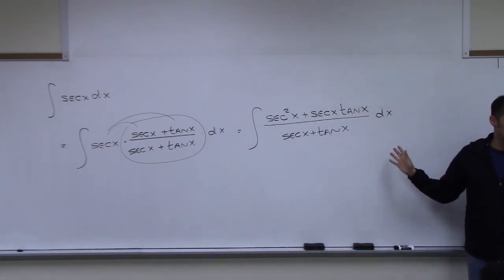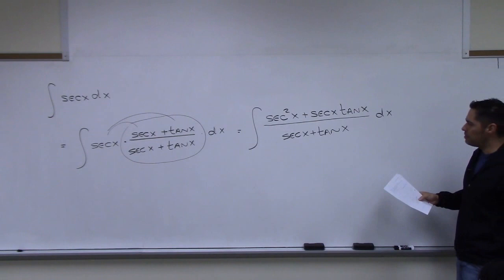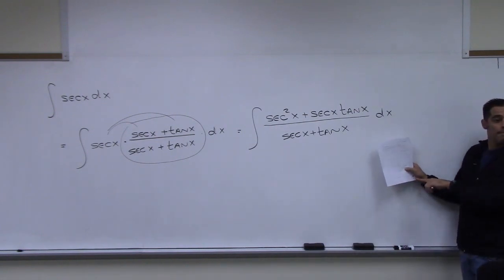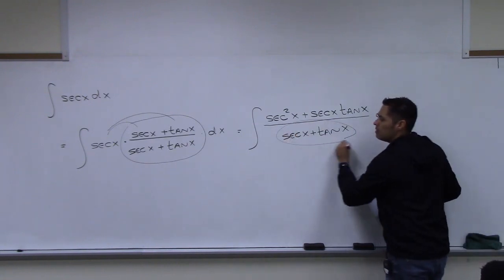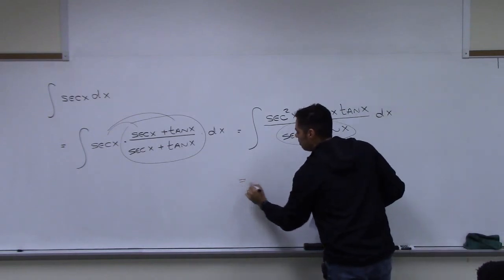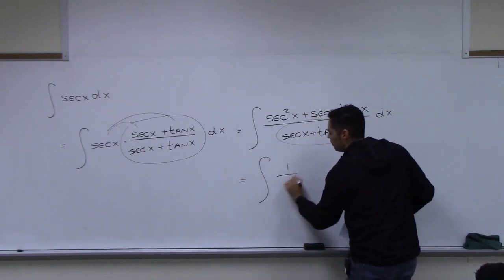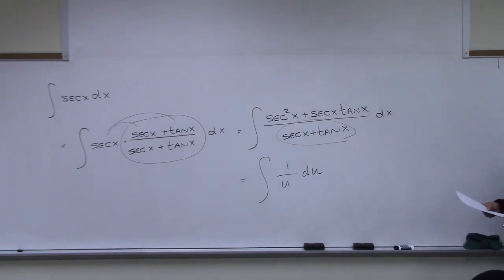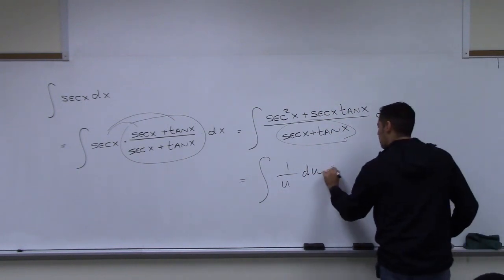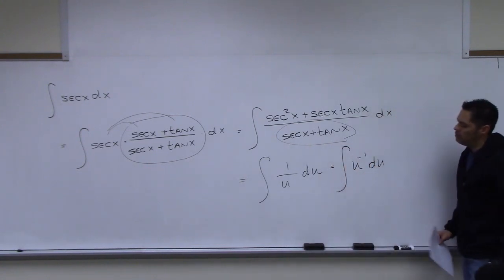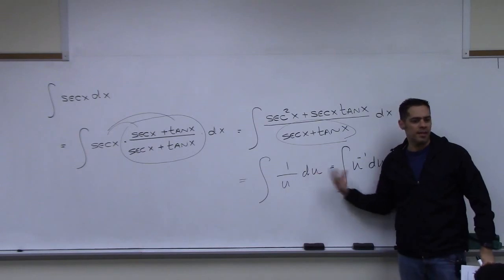Now we have the formula. Make the substitution: u is secant x plus tangent x, and its derivative is right up there. When we rewrite the integral, it becomes 1/u du, or u to the negative 1 du — same thing. When you see that, you should automatically think natural log.